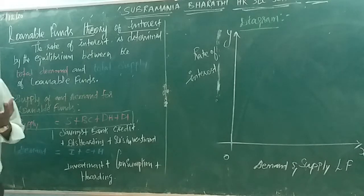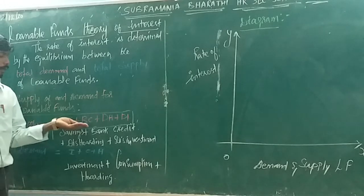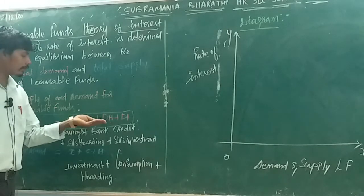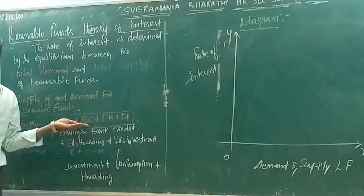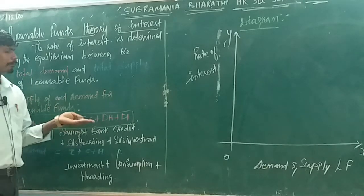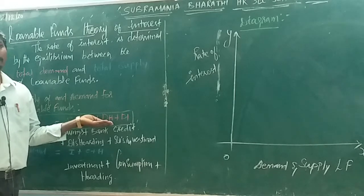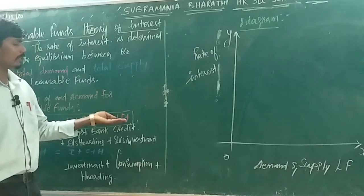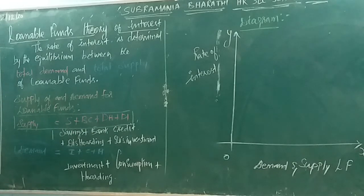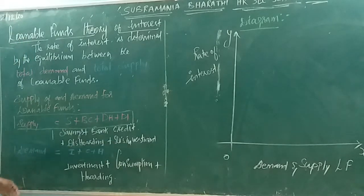Looking at the supply side, the four sources are: Savings, Bank Credit, Dishoarding, and Disinvestment. Savings kept outside banks are called dishoarding. Bank credit refers to funds created by the banking system. These four together form the total supply of loanable funds: savings, bank credit, dishoarding, and disinvestment.